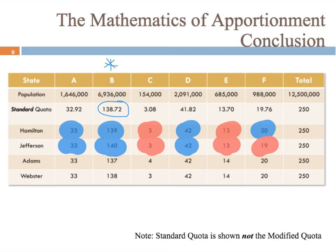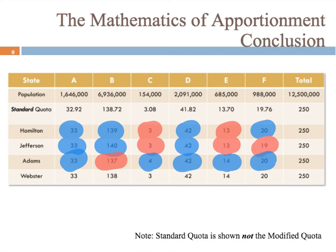Next, let's look at Adams' method, where we used the upper quota. State A went to its upper quota. State B went way down — the complete opposite of Jefferson's scenario. State C got to go up to 4, and states D, E, and F all went up. However, we have another violation — this time a lower quota violation with state B. With a standard quota of 138.72, state B shouldn't have less than 138, but they were given 137 in Adams' method. So Adams' method is not always fair either.